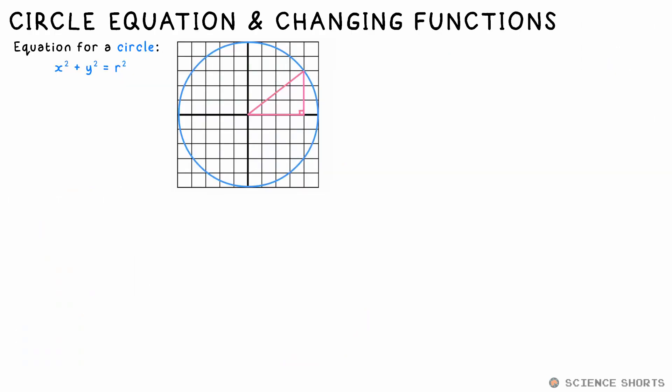the equation for a circle takes the form of x squared plus y squared equals a constant squared. This constant is the radius of the circle. If this looks familiar, that's because this is the equation for a right angle triangle too,